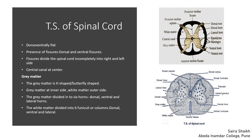Now we will study the cross-section or transverse section of the spinal cord to understand its internal structure. The dark-colored structure around the figure is the border region formed by the meninges — the three meninges being dura mater, arachnoid, and pia mater — which are the protective coverings. Just inner to these coverings, the actual spinal tissue is present.